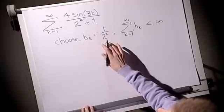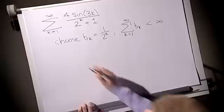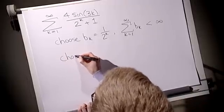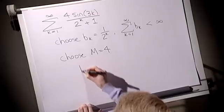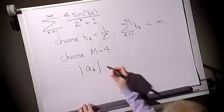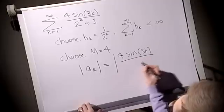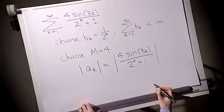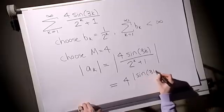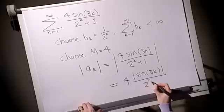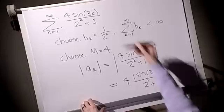Now we're going to try and compare this to this. It's quite similar. These terms actually look a bit smaller because they've got a larger denominator, although there's a factor of 4 on the top. So let's choose m to equal 4 to try and cope with the 4 sine 3k. And now let's look at the modulus of ak. This is equal to the modulus of 4 sine 3k over 2 to the k plus 1, which is equal to 4 into the modulus of sine 3k, all over 2 to the k plus 1. We're trying to aim here towards m multiplied by bk and try and show this is less than it.